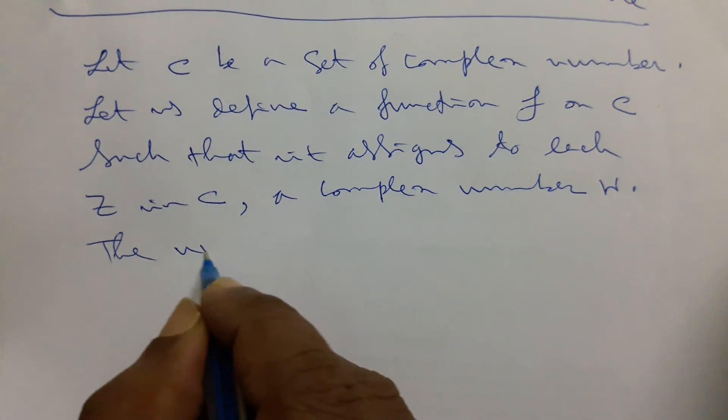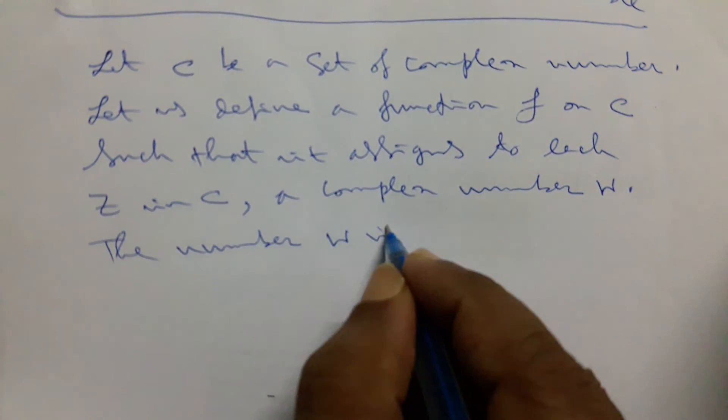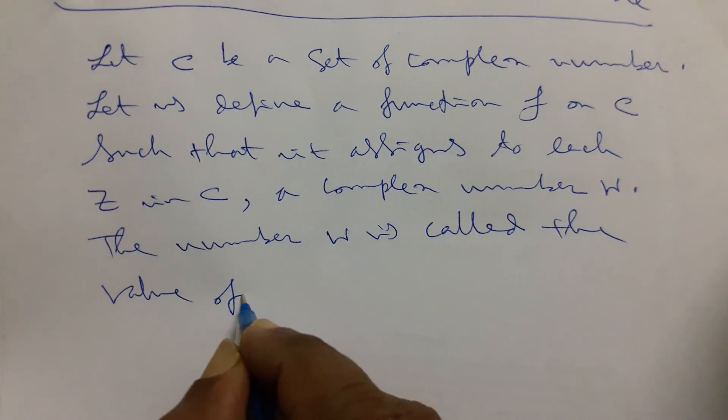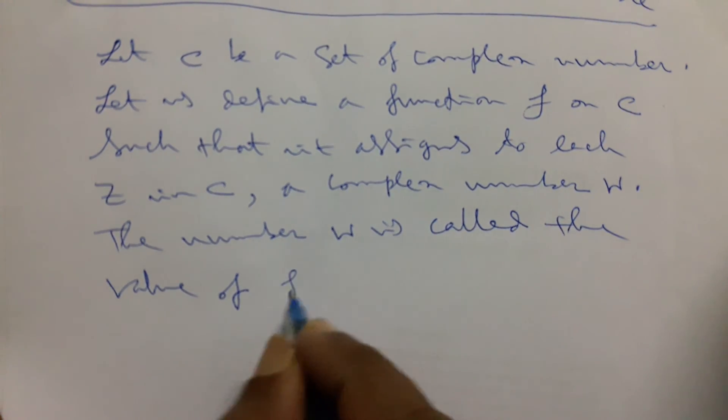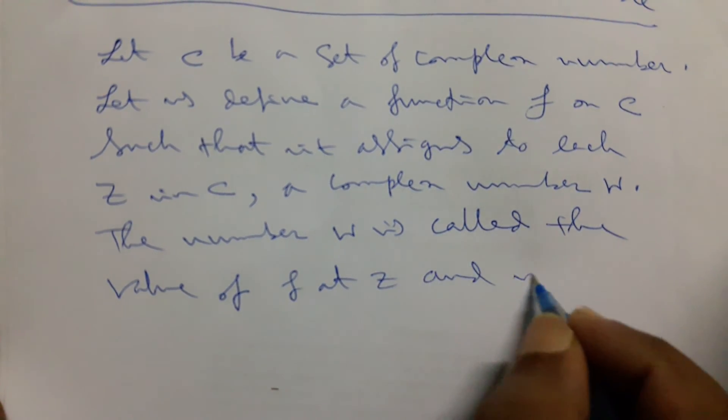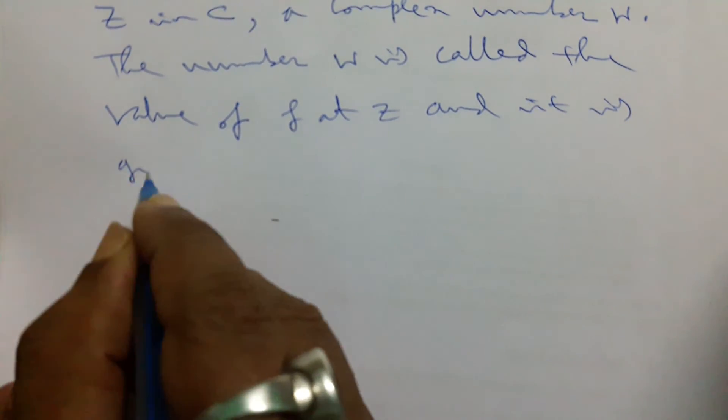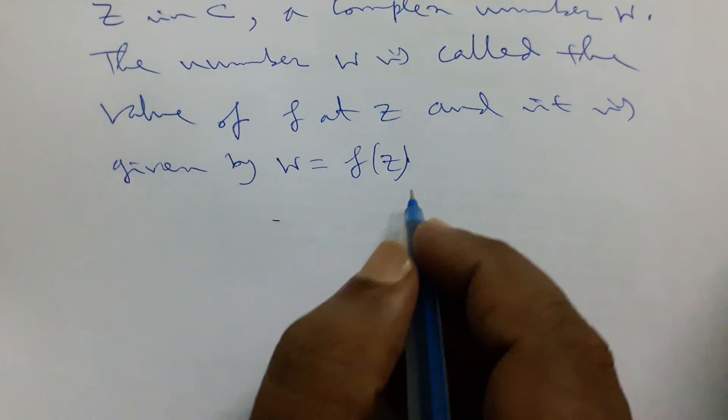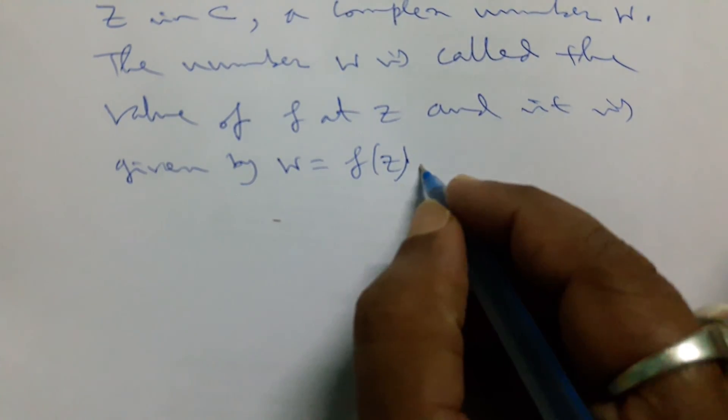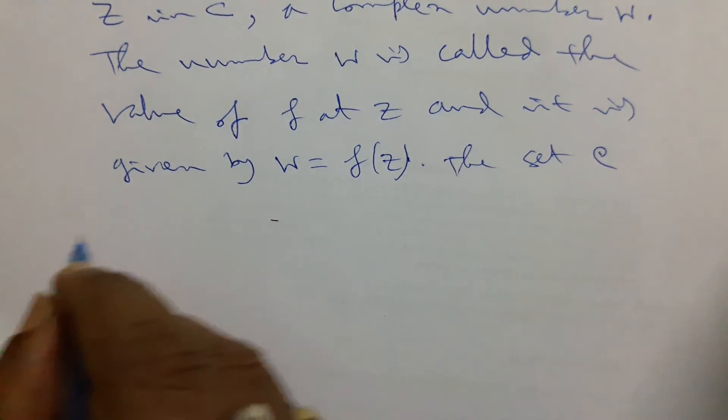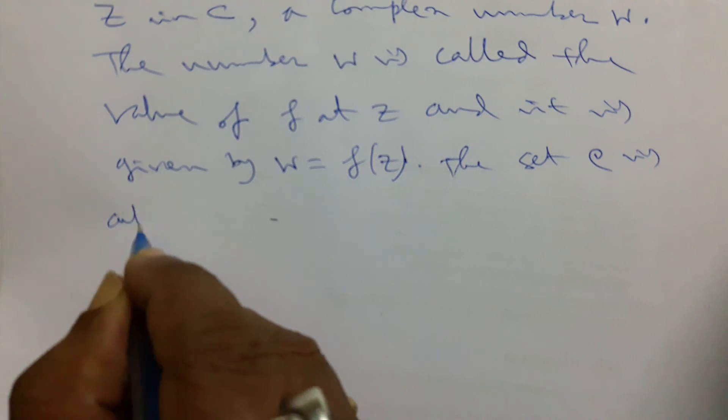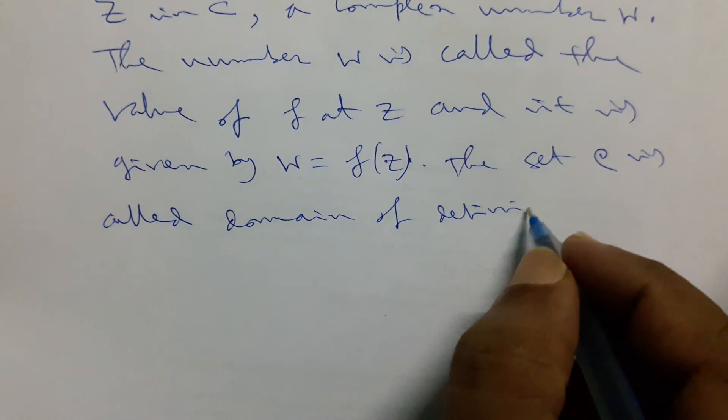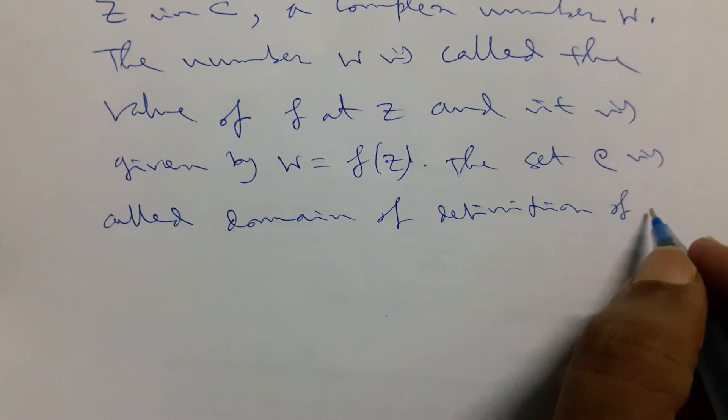The number w is called the value of f at z and is given by w equals f of z. In this way we can define, and the set C is called the domain of definition of f.